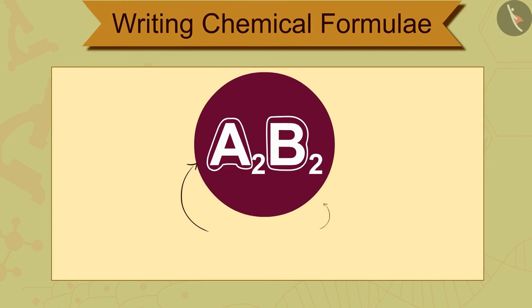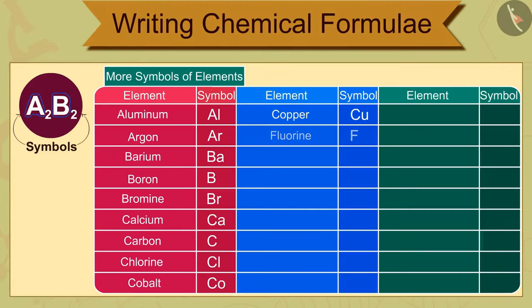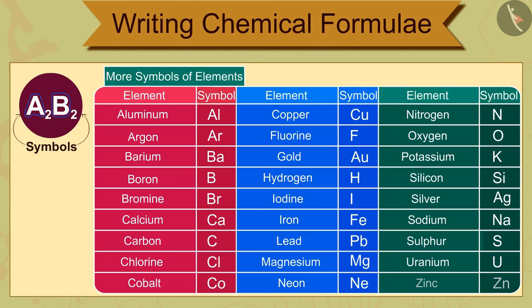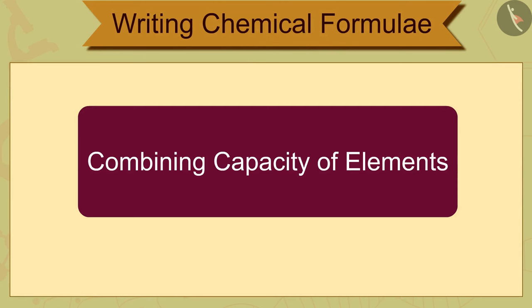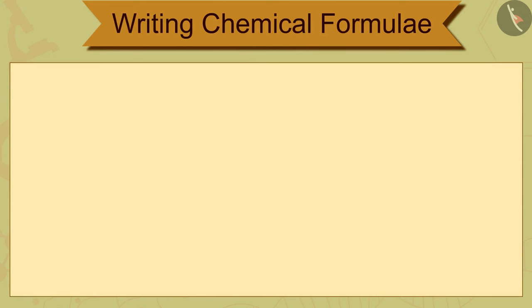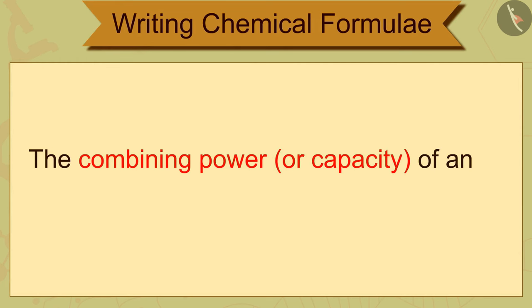But for this we should know the symbols and their combining capacity. We have studied symbols of elements. Let us now learn about the combining capacity of elements. The combining power or capacity of an element is known as its valency.